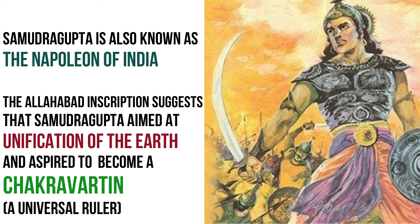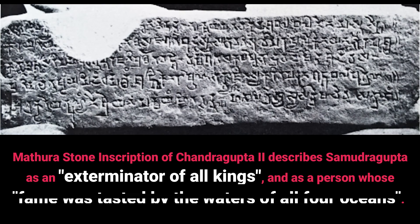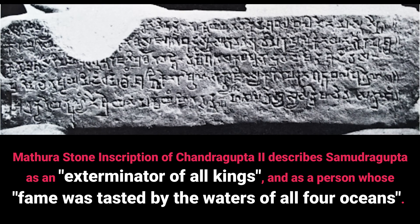The Allahabad pillar inscription suggests that Samudra Gupta's aim was the unification of the earth, suggesting he may have aspired to become a Chakravarthin, i.e., a universal ruler. The Mathura stone inscription of Chandragupta II described Samudra Gupta as an exterminator of all kings and as a person whose fame was tasted by the waters of all four oceans.